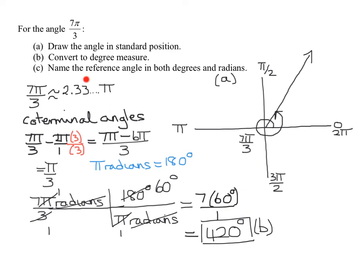The last thing I have to do is find the reference angle in both degrees and radians. Remember, the reference angle is the acute angle the terminal side makes with the x-axis. So here is the acute angle that the terminal side makes with the x-axis. So I'm just going to label that theta right there. So all we have to do is find theta.